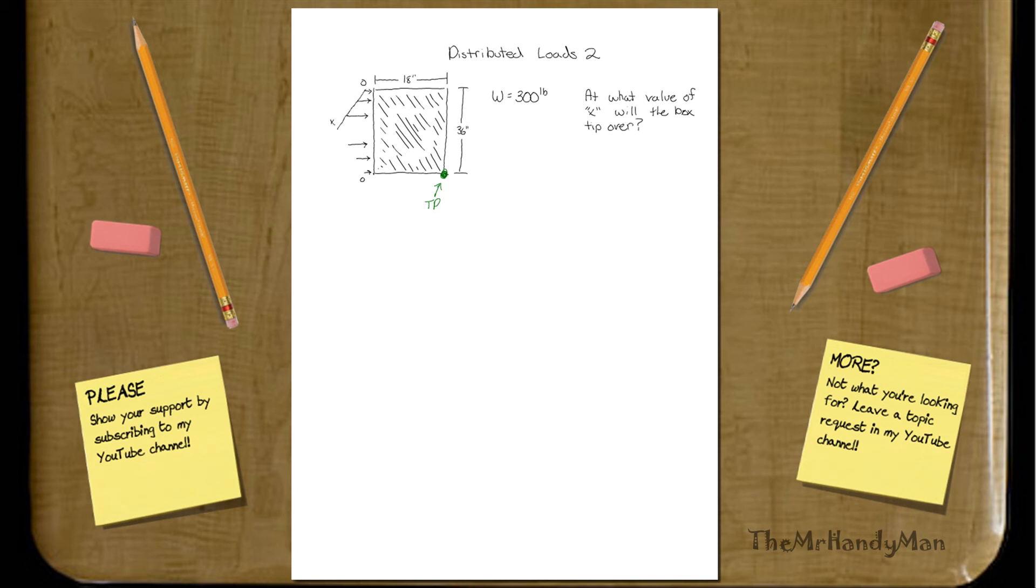Just assume that inside the box everything's evenly distributed, so the centroid is smack dab right in the middle. So how would we determine this? Well, first off, we need to find what is the total force of this distributed load relative to X obviously, and where is that force going to be located. That's the first step.